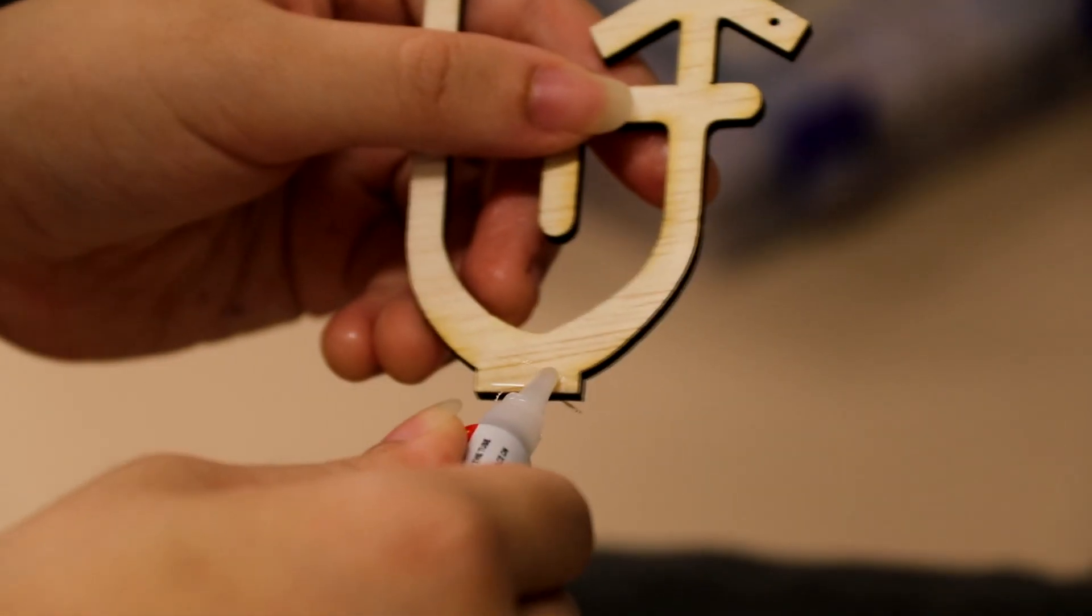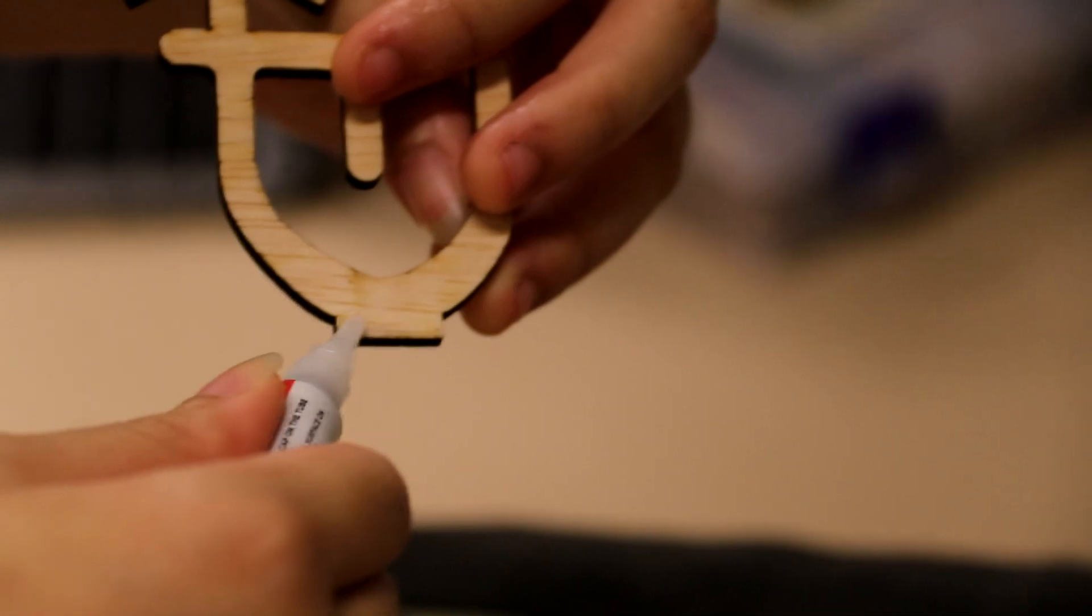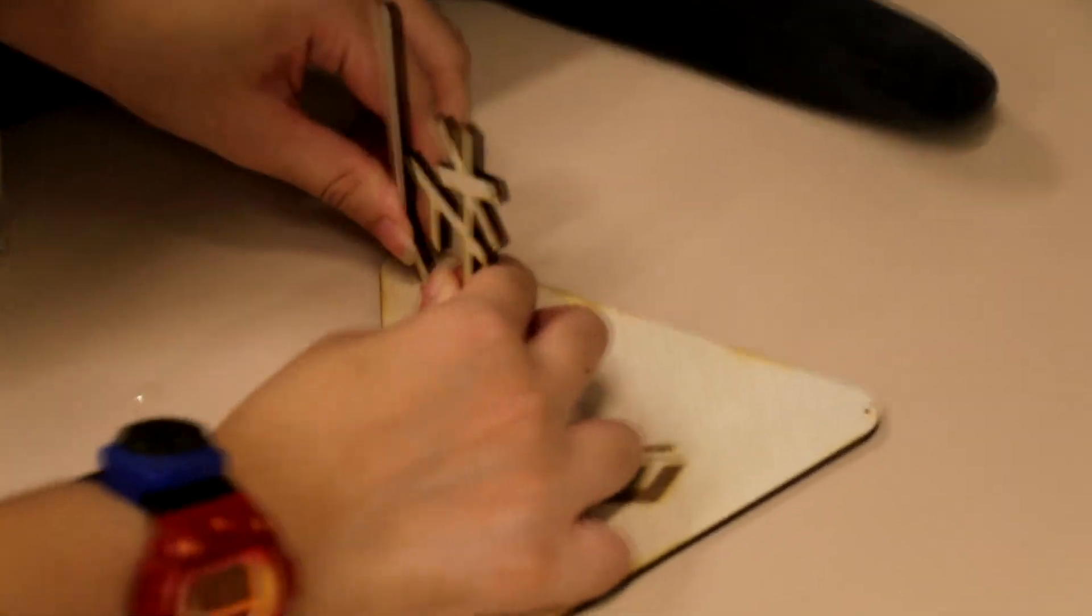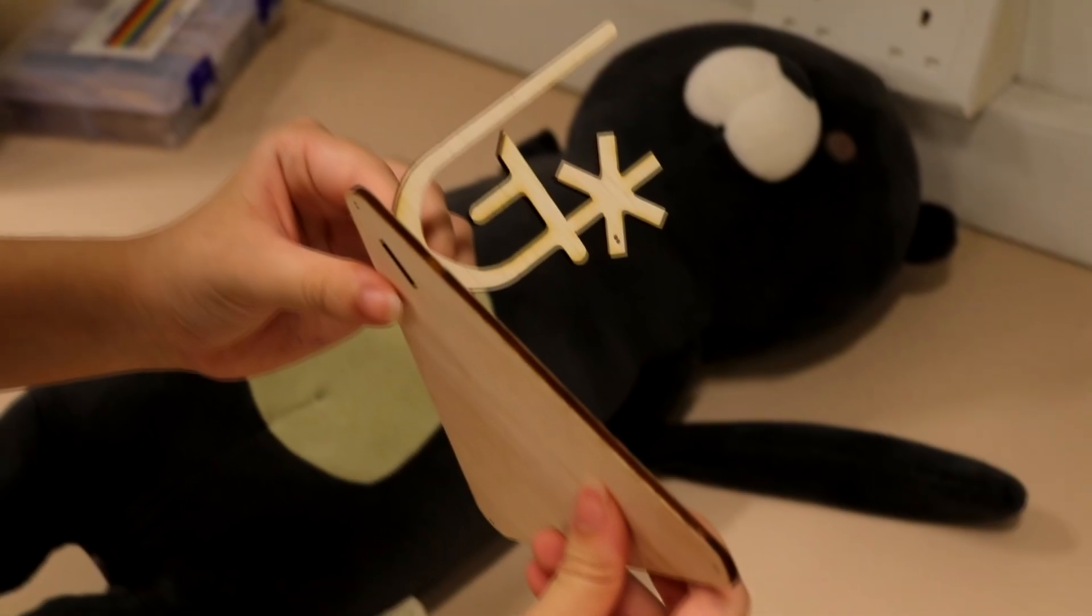Next, carefully glue the NUS High logo-shaped wooden piece into the slot on the other triangular piece. Make sure that the logo on the triangular piece faces upwards. Again, leave it to dry.